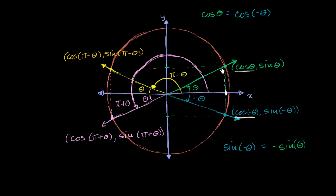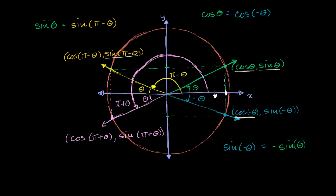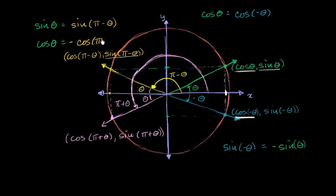Now let's compare theta and pi minus theta. These two points have the same y-coordinate, so sine of theta equals sine of pi minus theta. However, their x-coordinates are the same distance from the origin but on opposite sides, so cosine of theta equals the negative of cosine of pi minus theta.